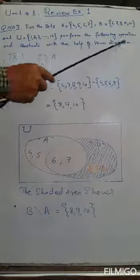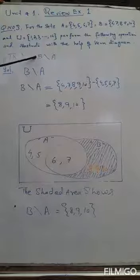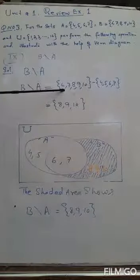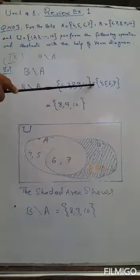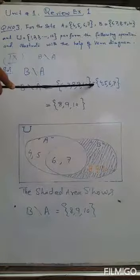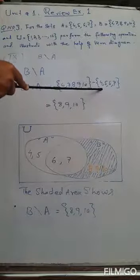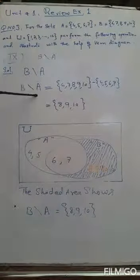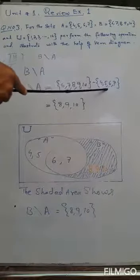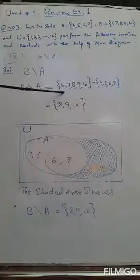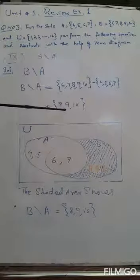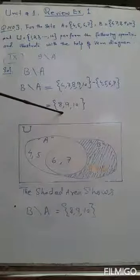We have to find B\A, which means B minus A. The elements of set B are {6, 7, 8, 9, 10}, minus the elements of set A, which are {4, 5, 6, 7}. B\A means the elements which are present in set B but not in set A. Six and seven are also present in set A, but eight, nine, and ten are not present in set A. So B\A = {8, 9, 10}.